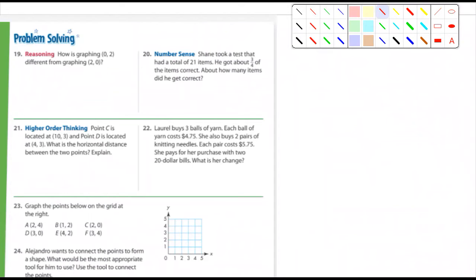Number 20. Shane took a test that had a total of 21 items and he got about three quarters of the items correct. About how many items did he get correct? Well, this really has nothing to do with graphing, but it does have to do with multiplication. So it's three quarters times 21. And you should all be able to do that by now.